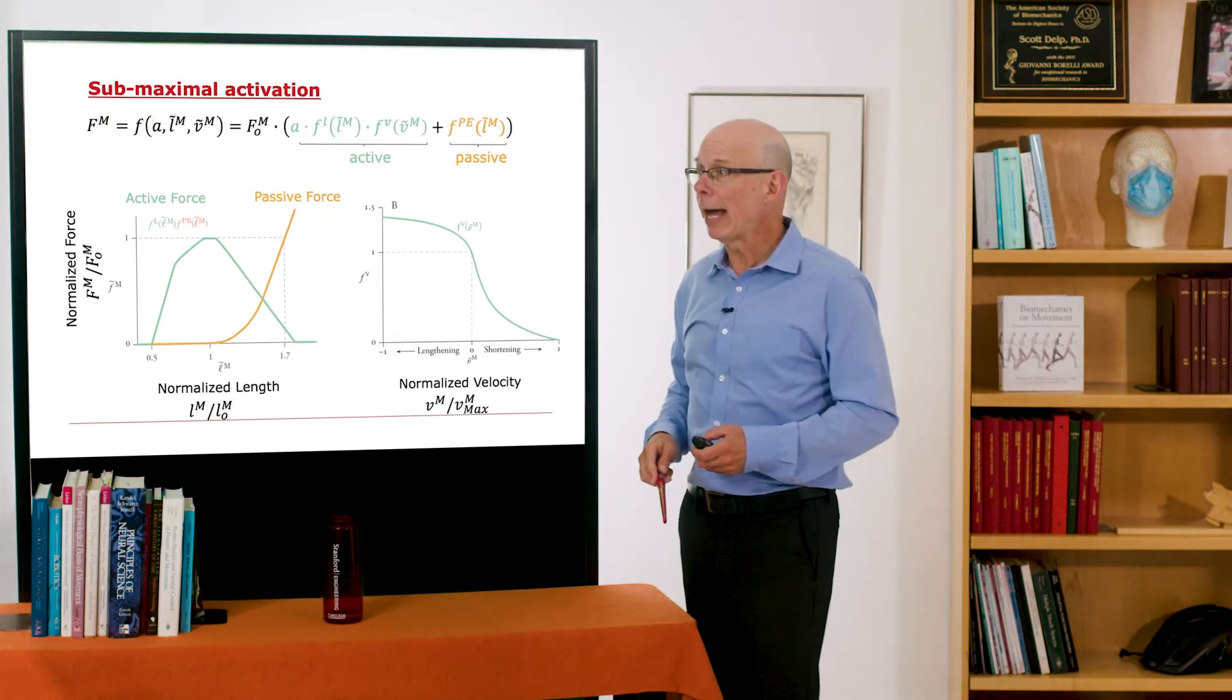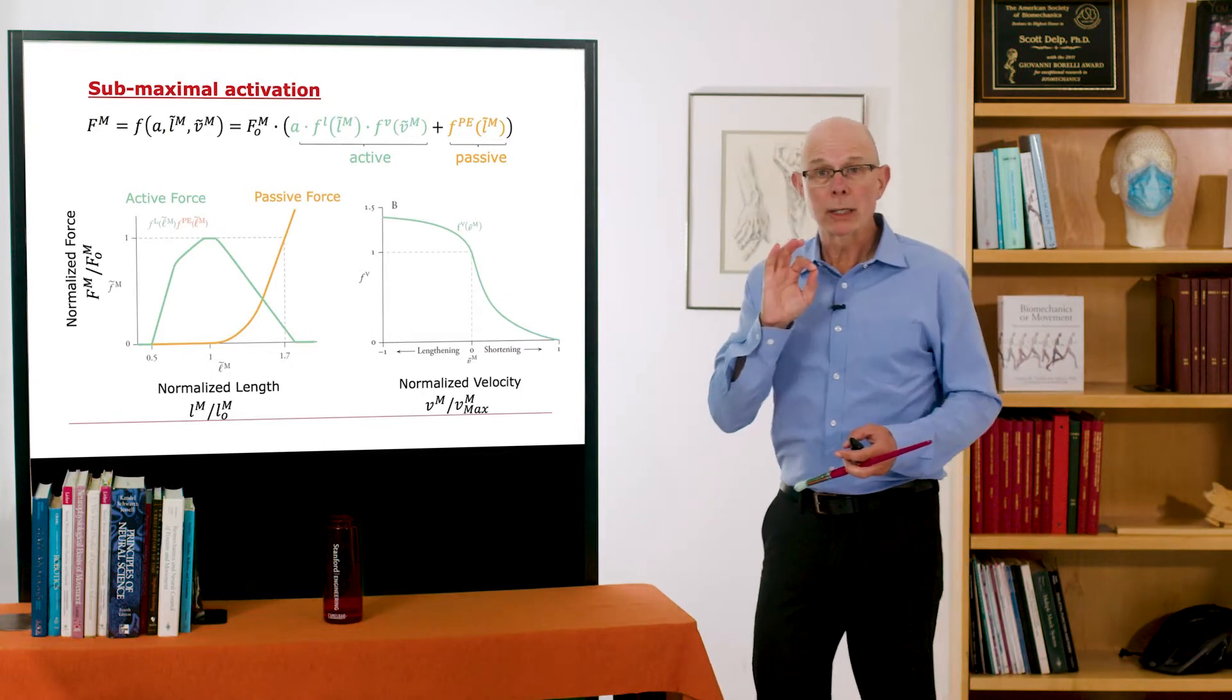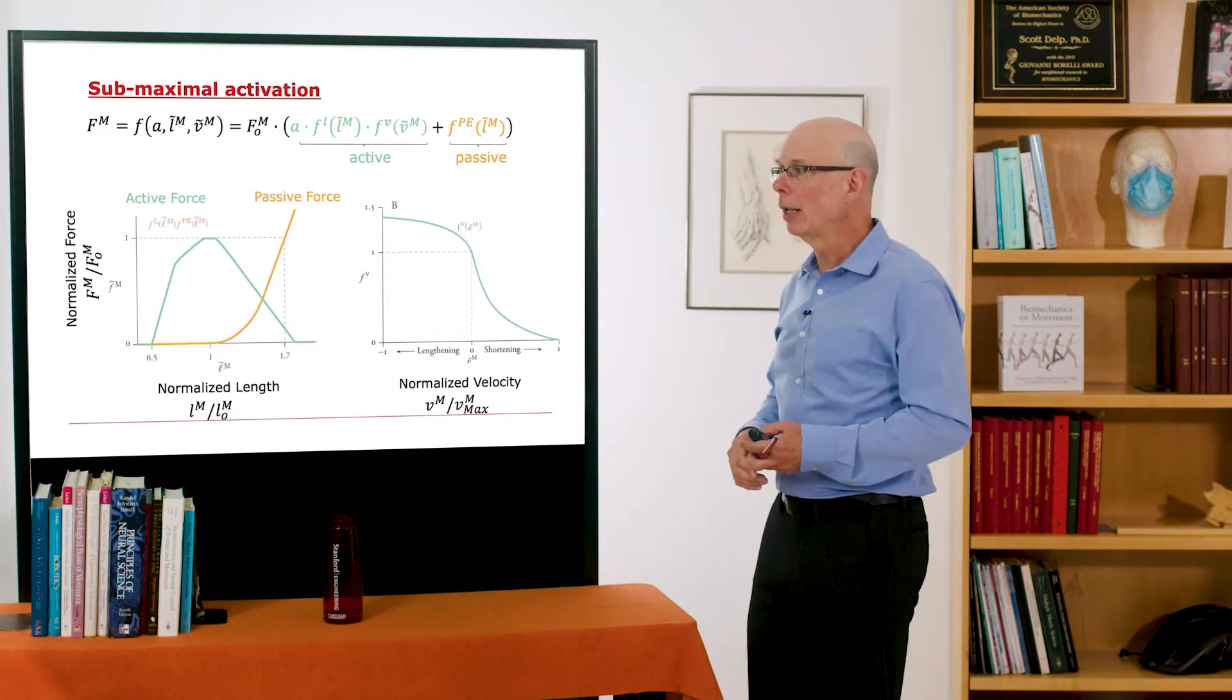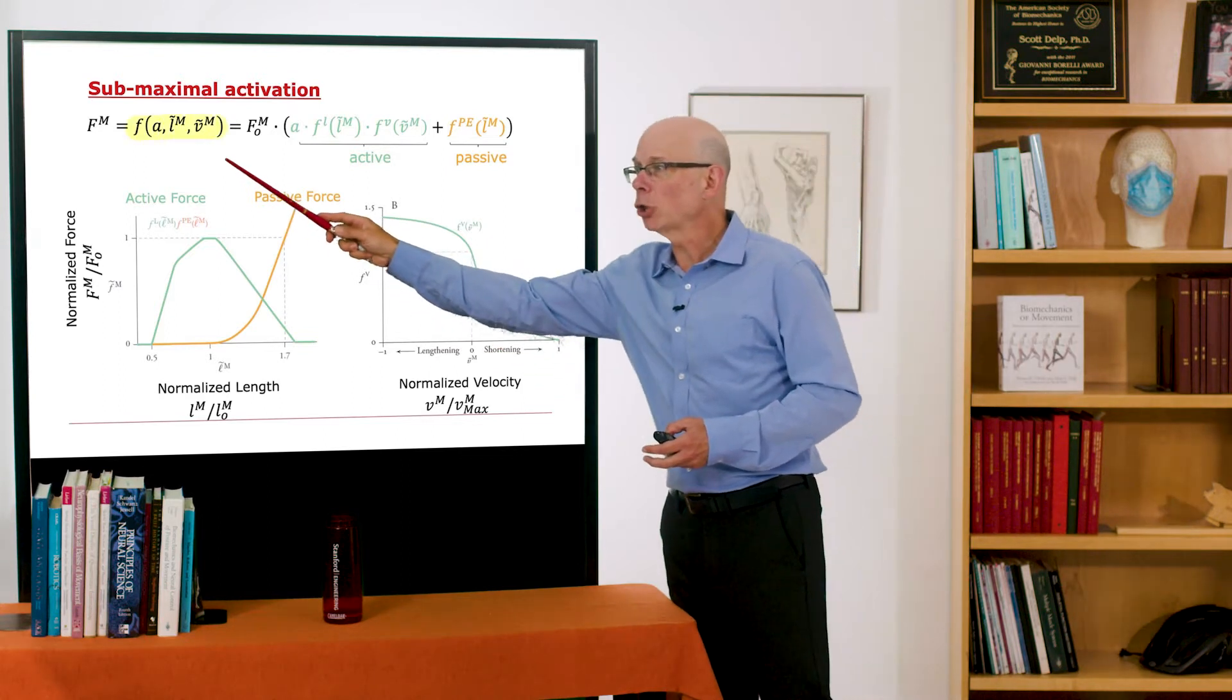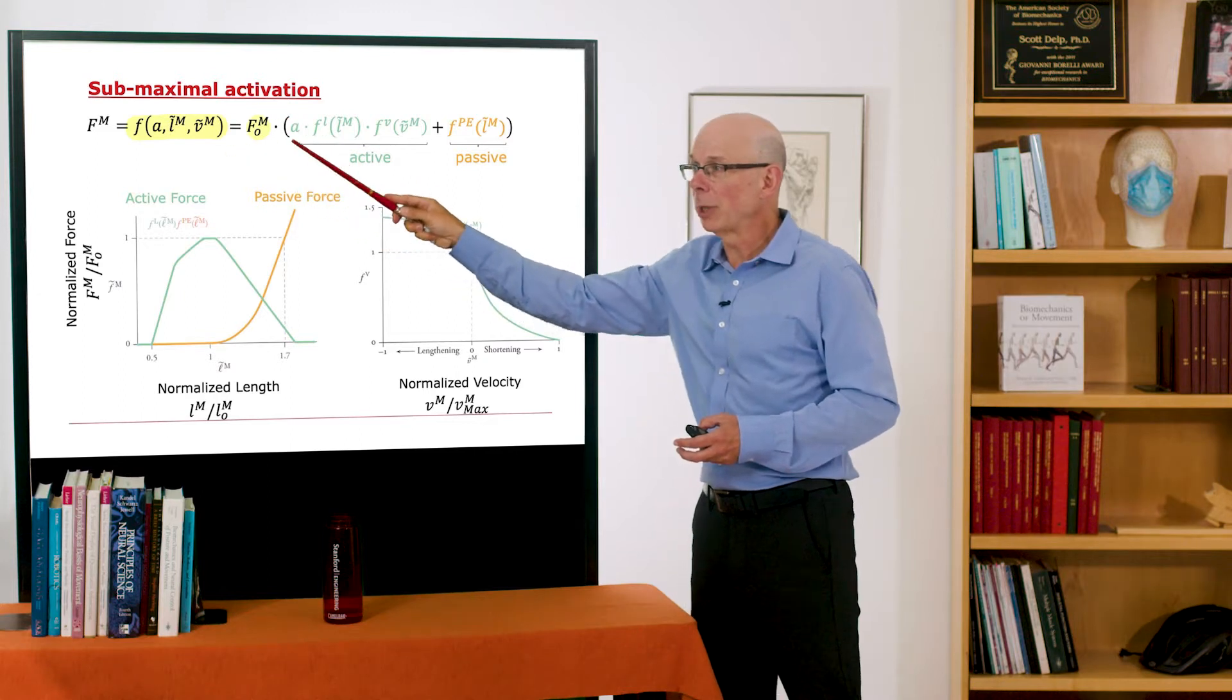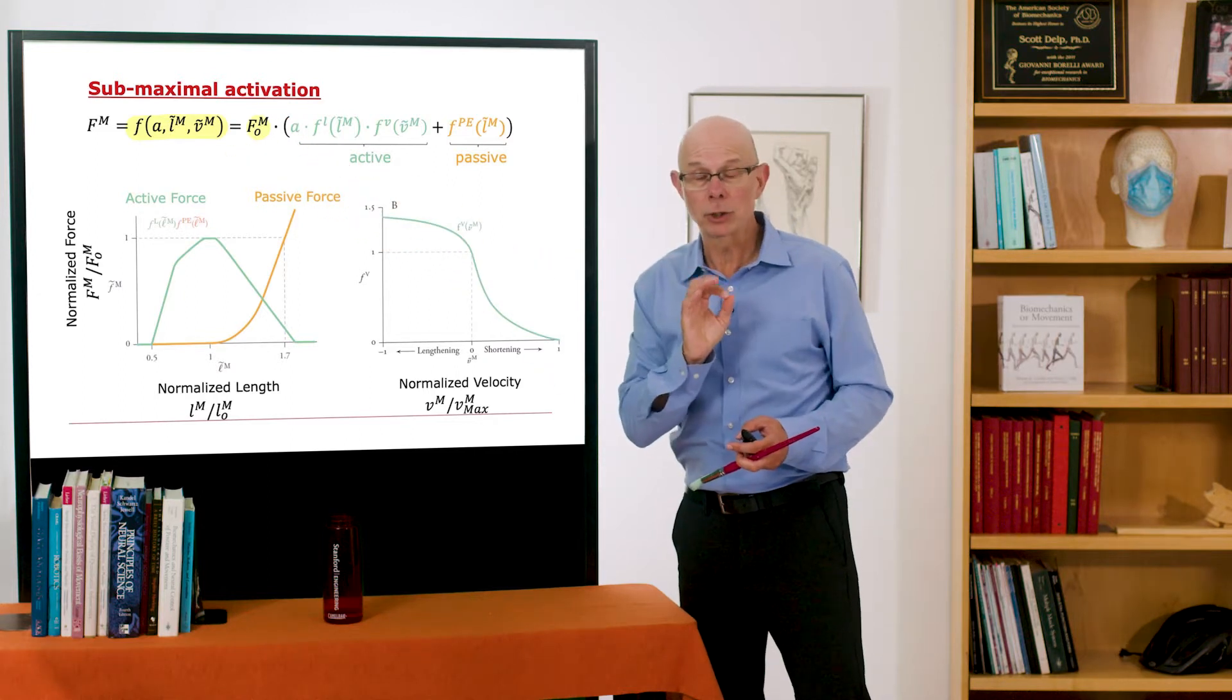So let's expand that a little bit. We can calculate this from things that we know and can estimate. So the muscle force is a function of these three, but we can just take the peak isometric force of muscle, and we'll know that for each muscle.